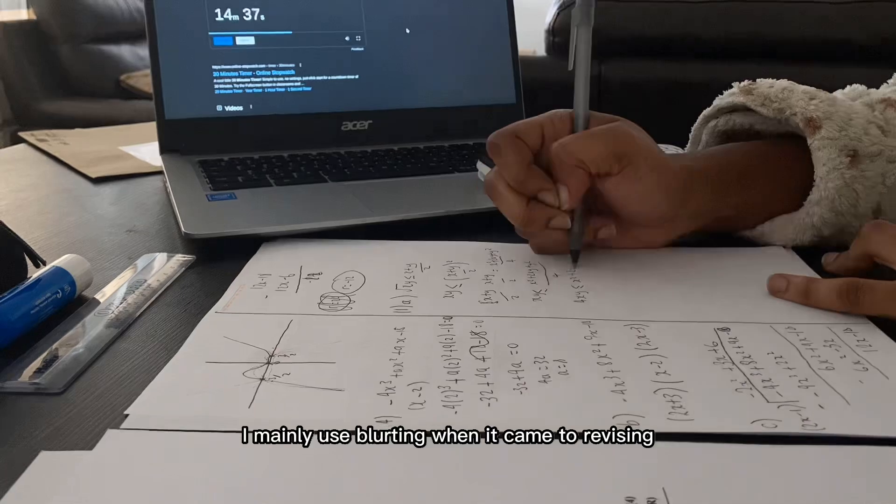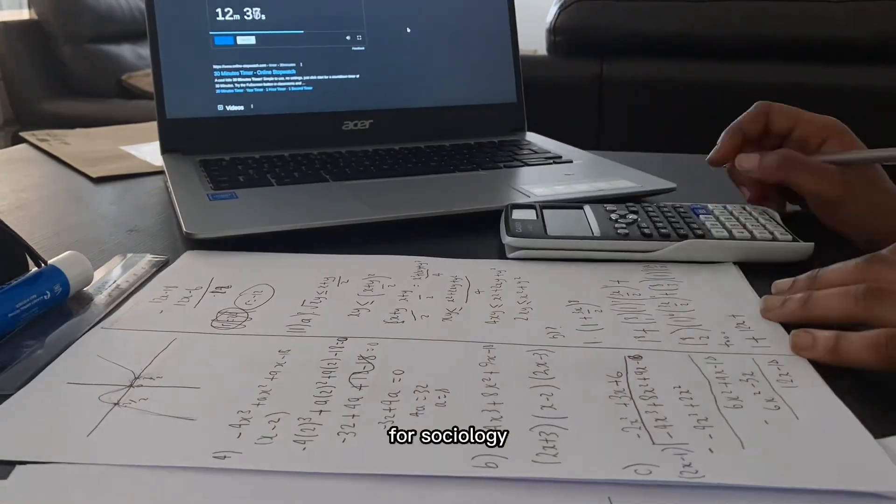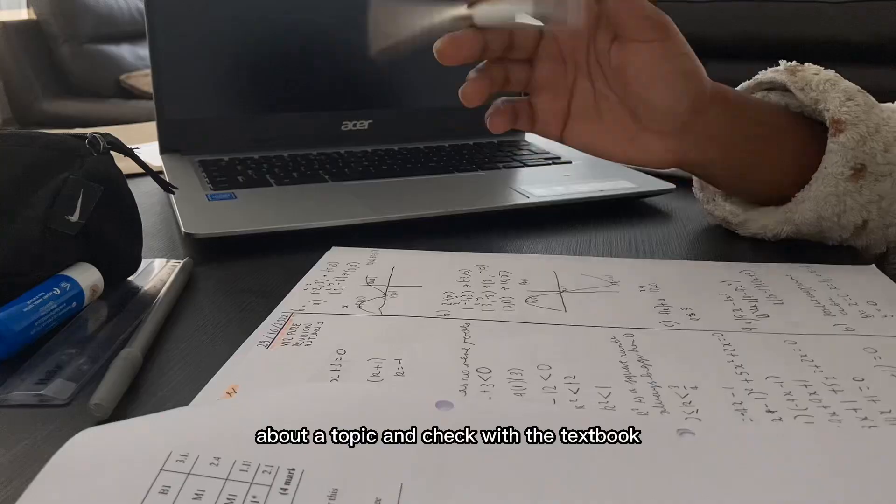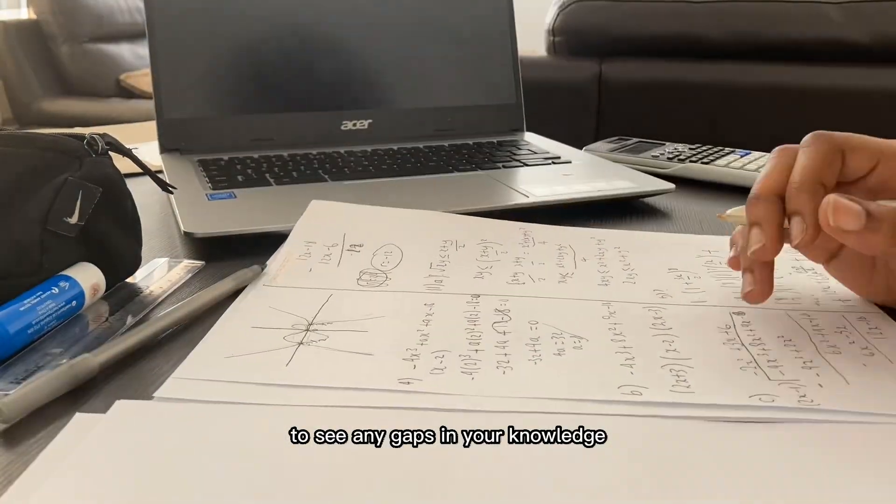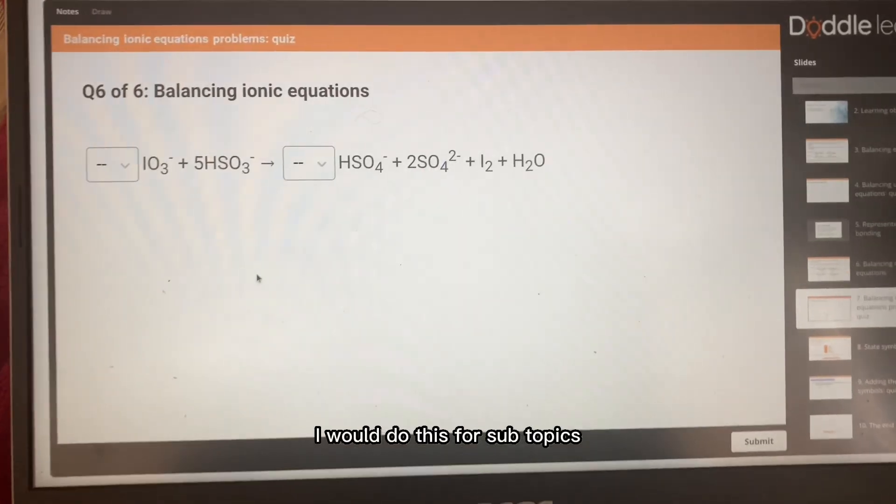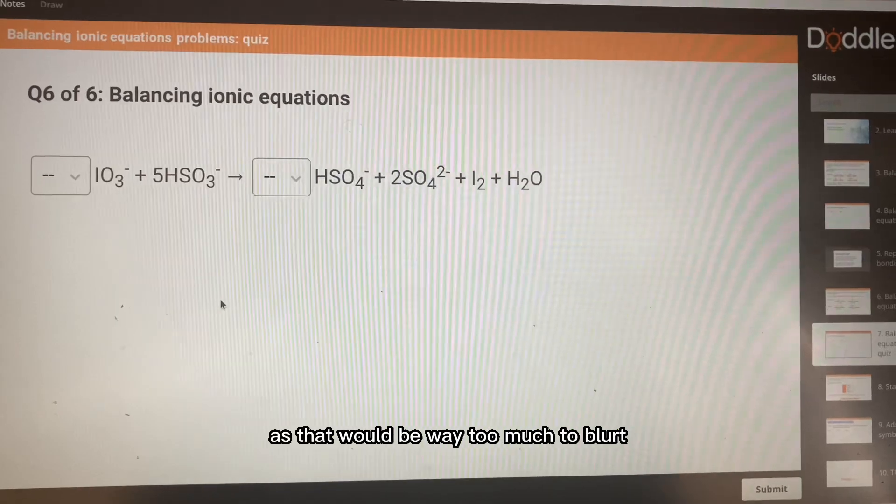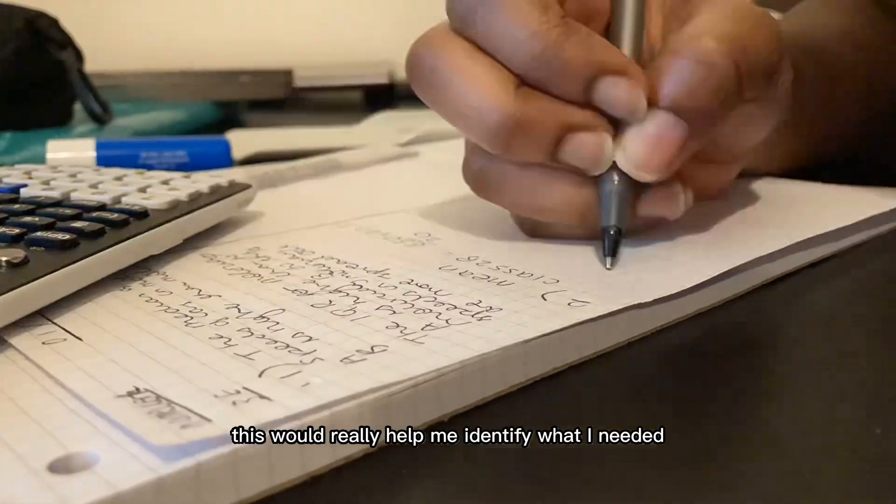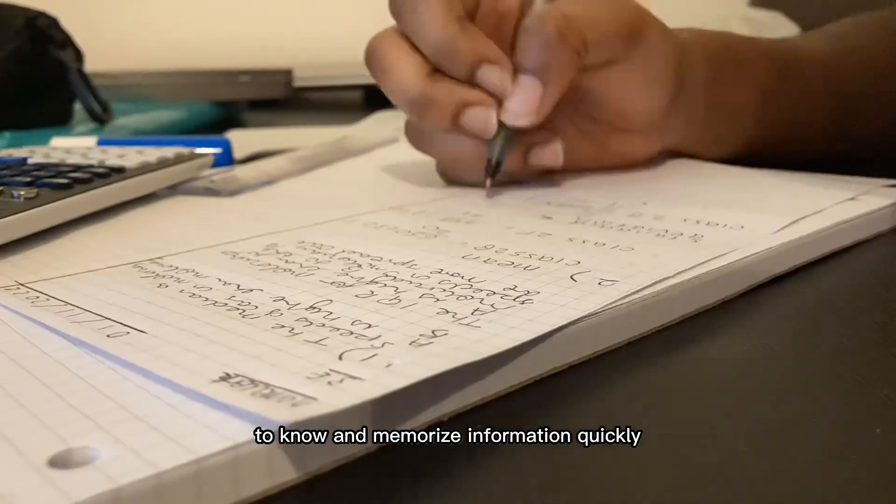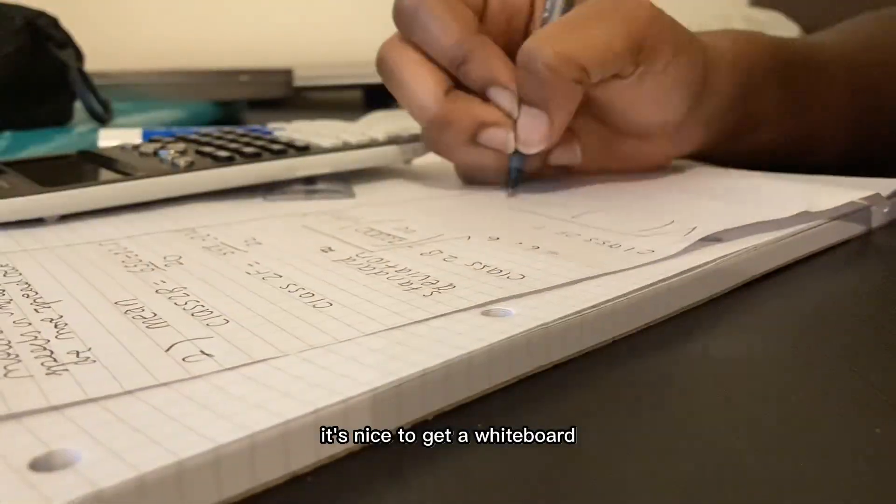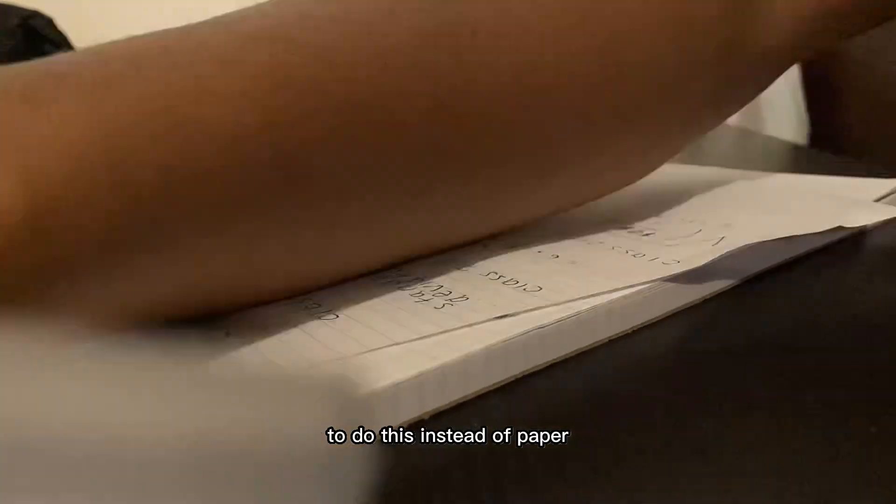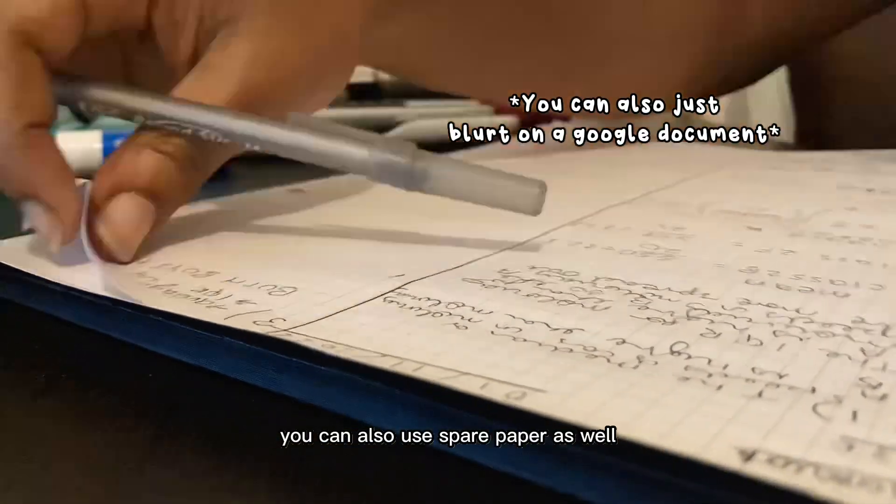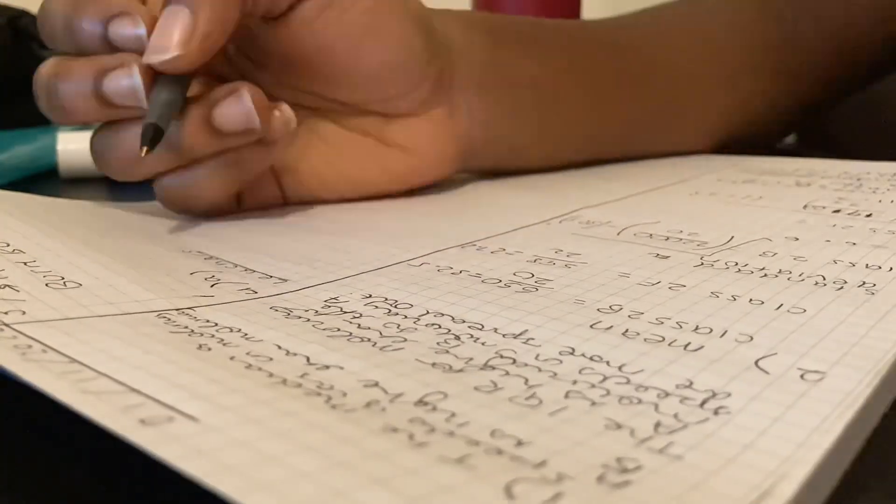I mainly use blurting when it came to revising for sociology. This is when you write down as much as you know about a topic and check with the textbook to see any gaps in your knowledge. I would do this for subtopics instead of one whole topic, as that would be way too much to blurt. This would really help me identify what I needed to know and memorize information quickly. It's nice to get a whiteboard to do this instead of paper, but if you don't have a whiteboard you can also use spare paper as well.